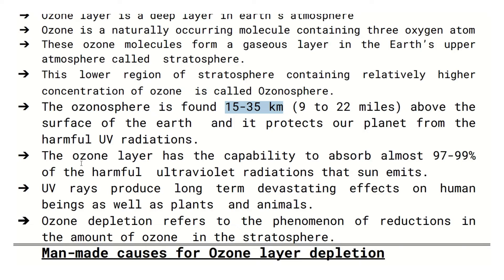The ozone layer blocks 97 to 99% of the harmful ultraviolet radiations that the sun emits. UV rays produce long-term devastating effects on human beings as well as plants and animals.